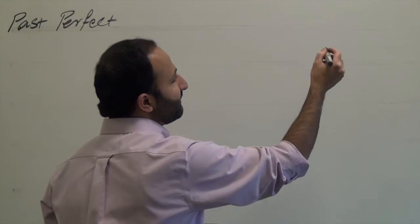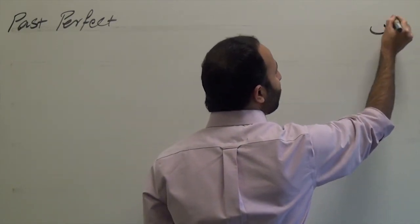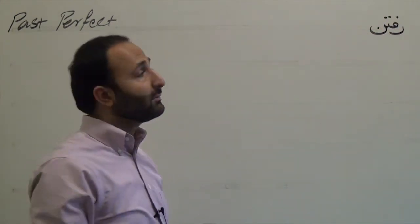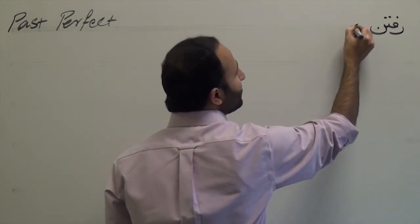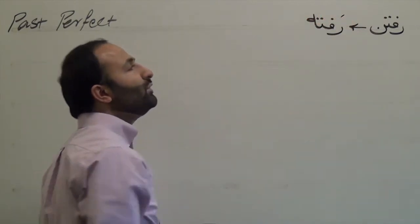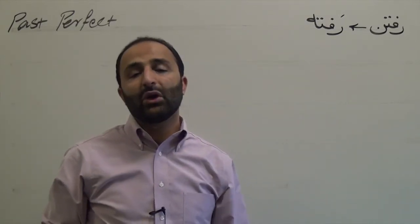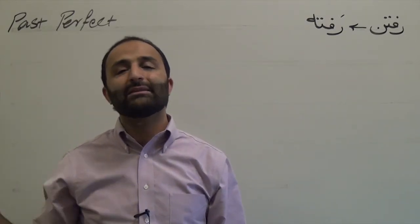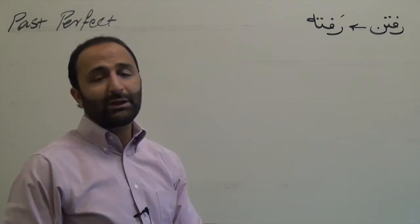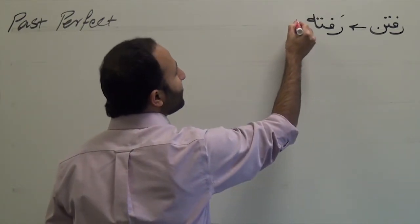For example, we have the verb raf-tan. The past participle of raf-tan is raf-teh. Then you need to conjugate the past participle with the past tense of the verb 'to be,' which is budan — budam. So, you conjugate raf-teh with budam.